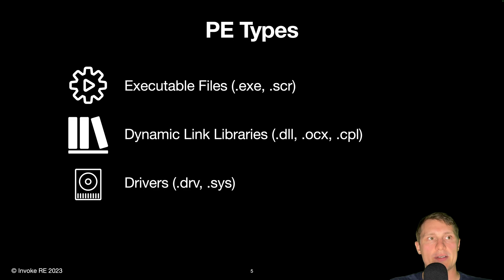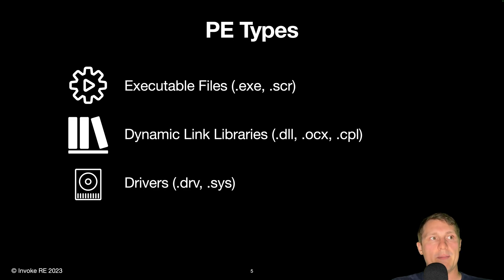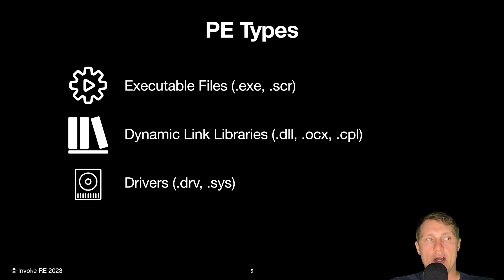The majority of userland interactions with Microsoft Windows are conducted using an application programming interface, or API, which is provided by DLLs. These APIs are commonly used by malware authors in order to carry out operations which they do not want to implement themselves. Windows drivers are also portable executables; however, they run within the lowest level of the operating system, commonly referred to as kernel land or kernel space.